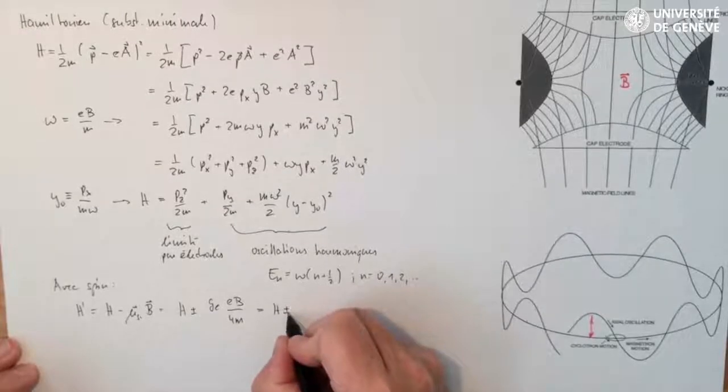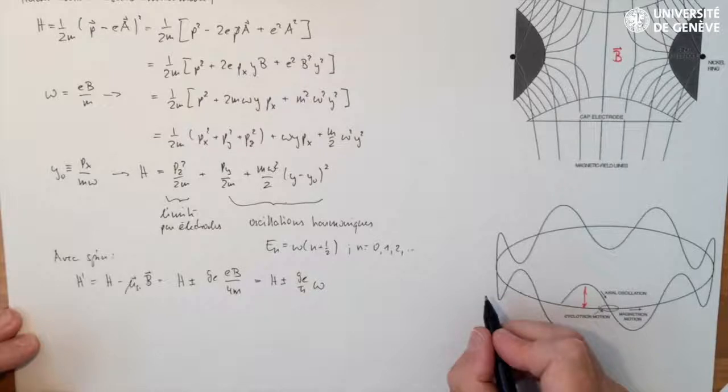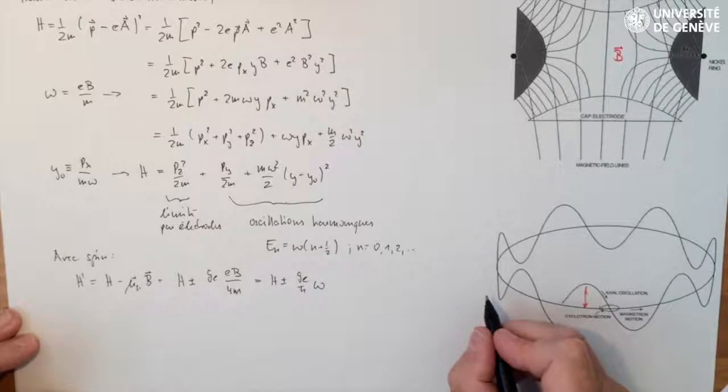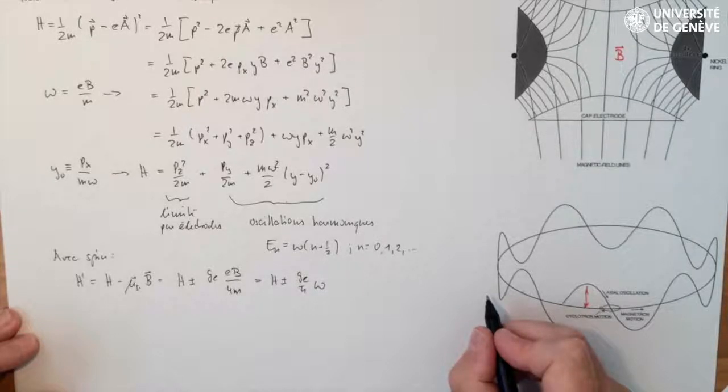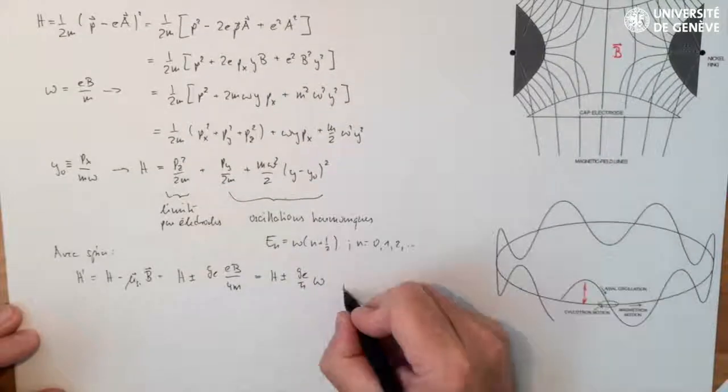This last term is g_e over 4 times the same cyclotron frequency which we had found earlier. The energies corresponding to the two spin directions differ from E_n by plus or minus g_e over 4 times omega.